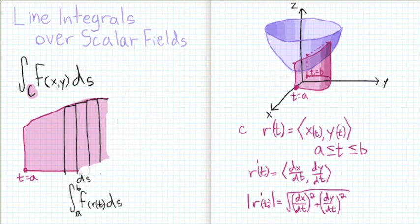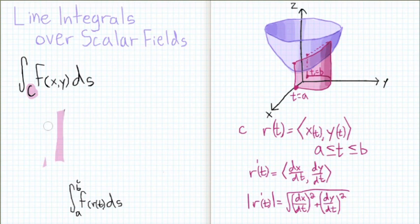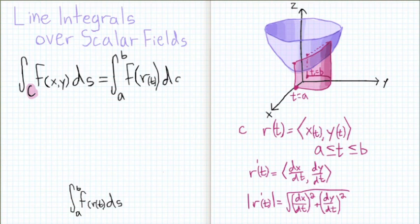Okay, we're making really good progress. We started out with the integral over some curve c of f of x, y, ds. And now we have the integral from a to b of f of r of t ds. Now maybe that doesn't look simpler, but it's actually in a form that's a lot easier for us to use.